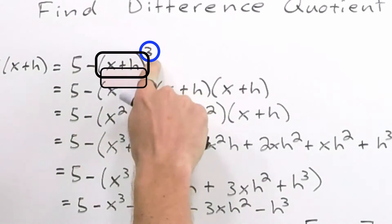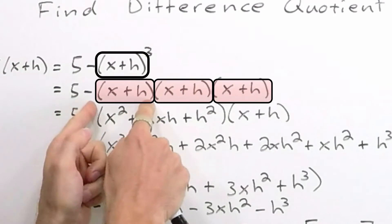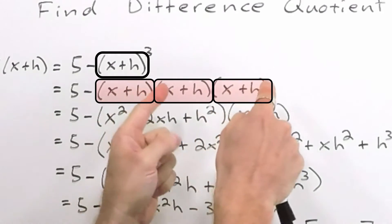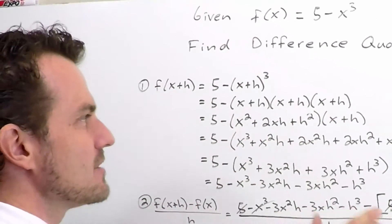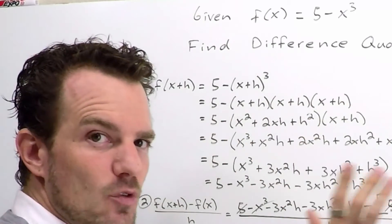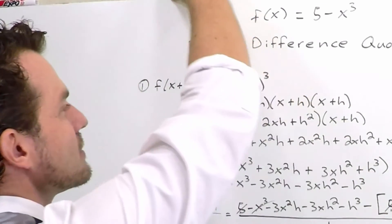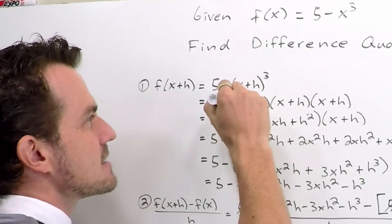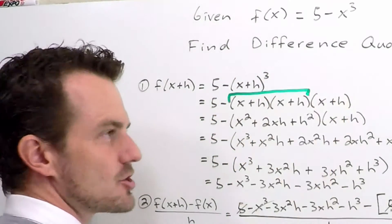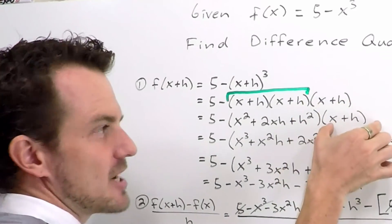So we've got x plus h cubed, so we'll need x plus h times x plus h times another x plus h. You can handle the multiplication here in any order you'd like, it doesn't matter. Personally, when working this problem, I thought it would be easiest to handle multiplying these two and leave x plus h hanging on the end.